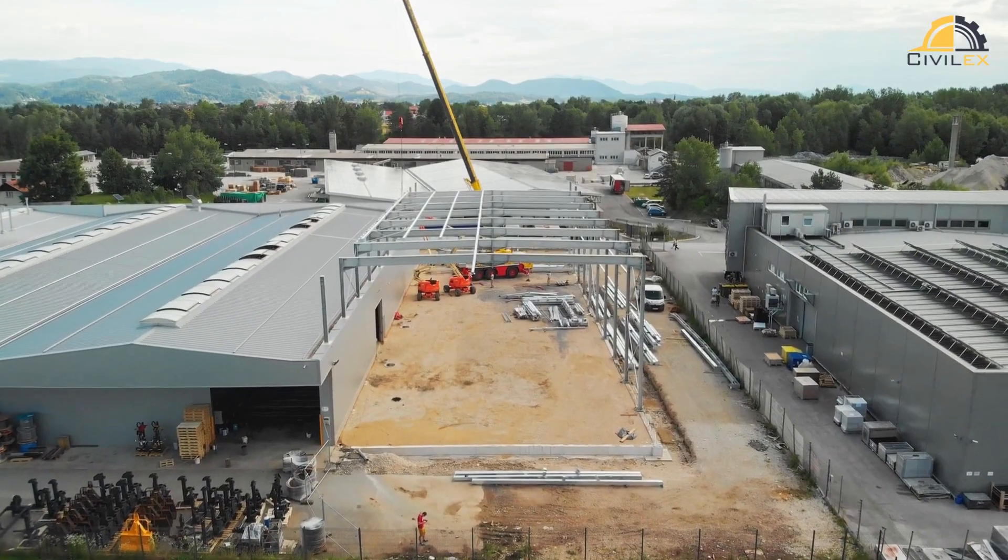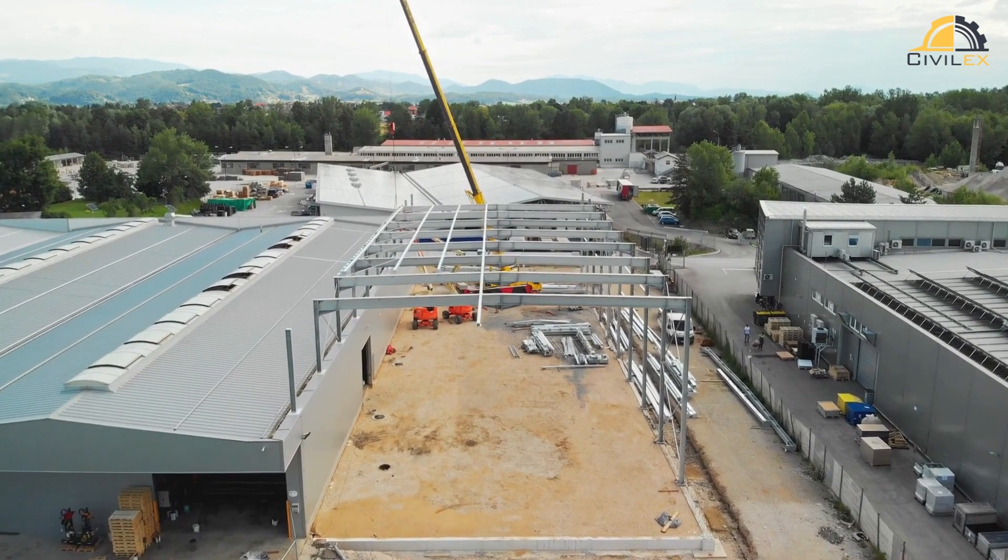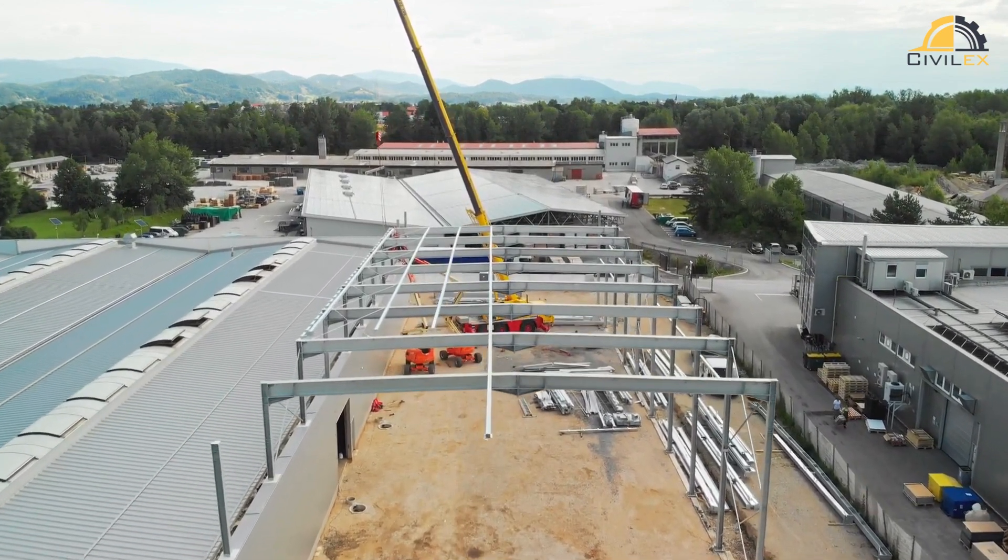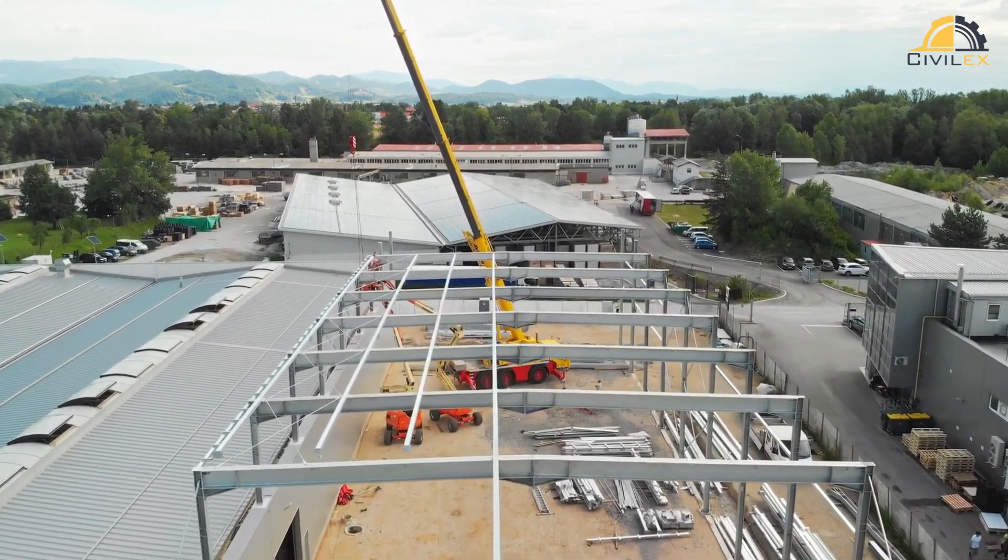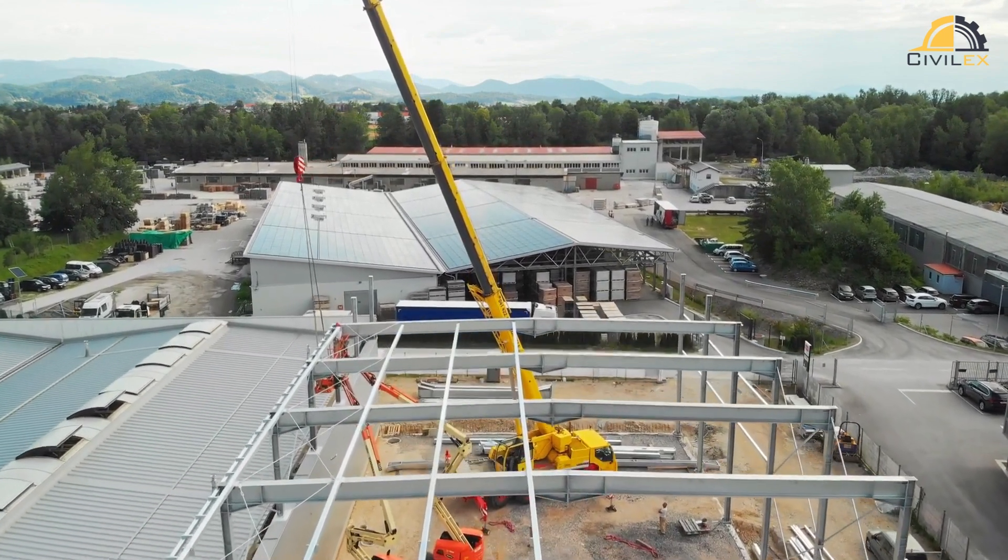Before we delve into the types of connections, let's talk about why they're so important. Connections are the glue that holds steel structures together. They determine how loads are transferred, how the structure responds to external forces like wind and earthquakes, and ultimately, how safe the entire system is.